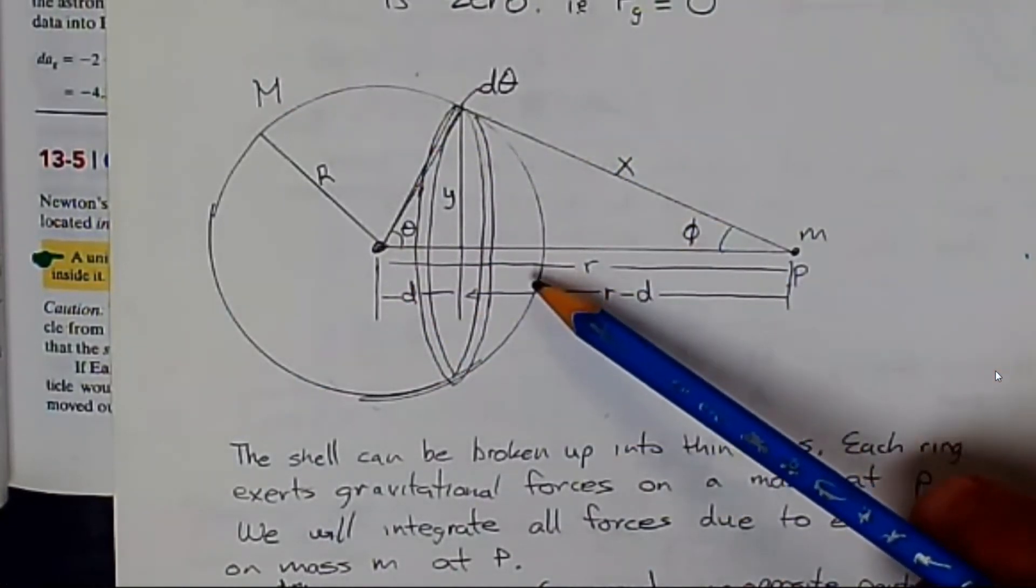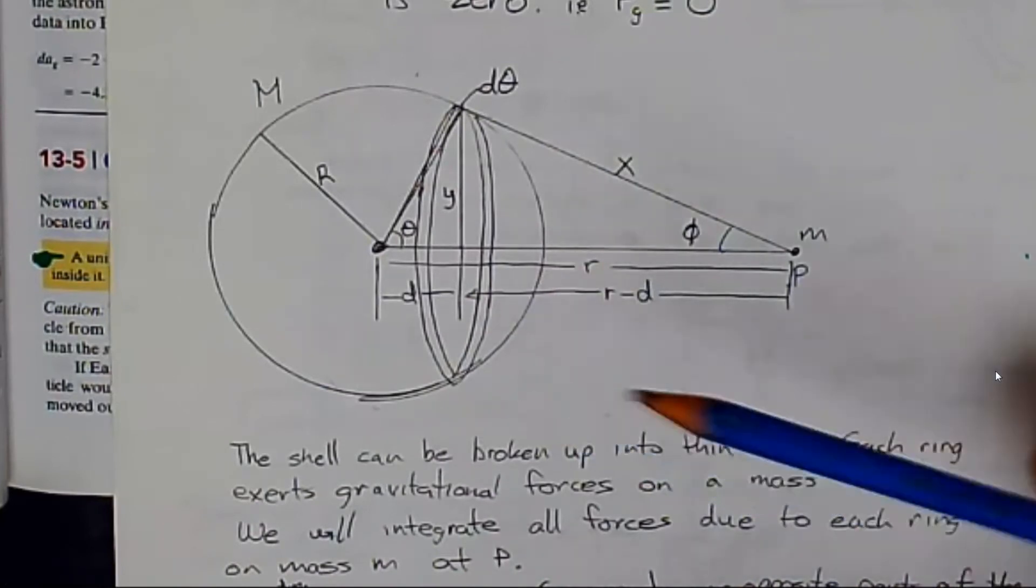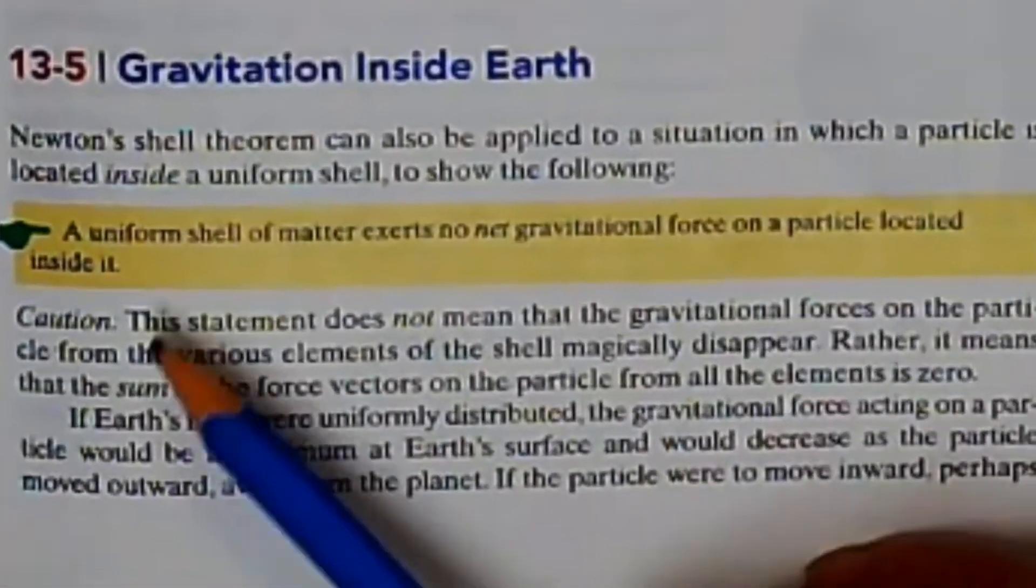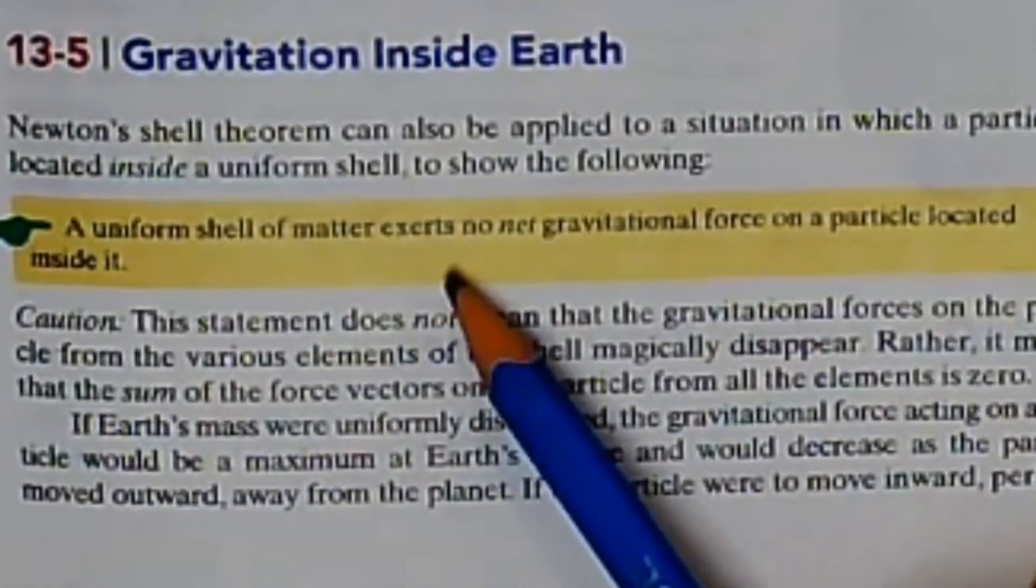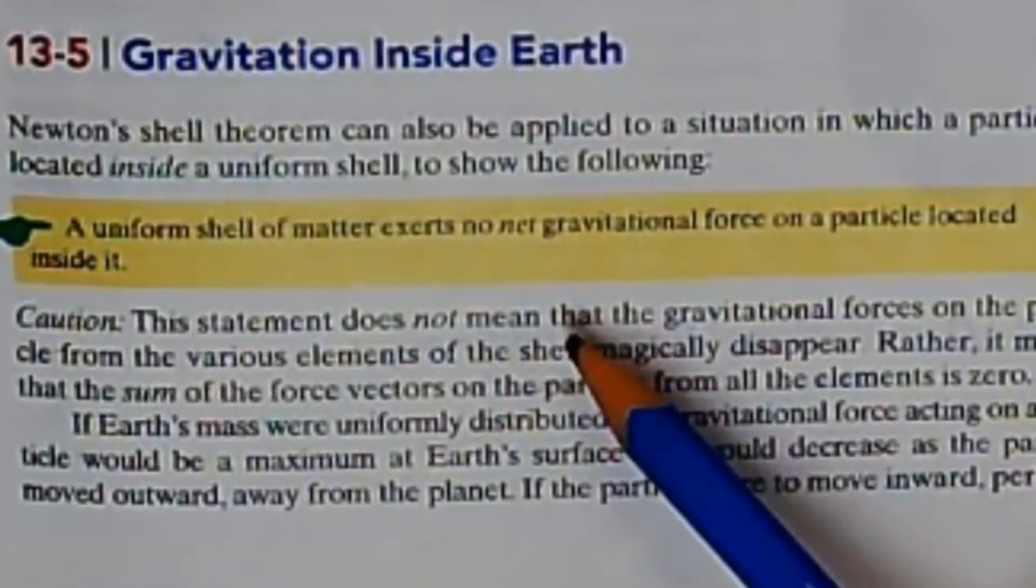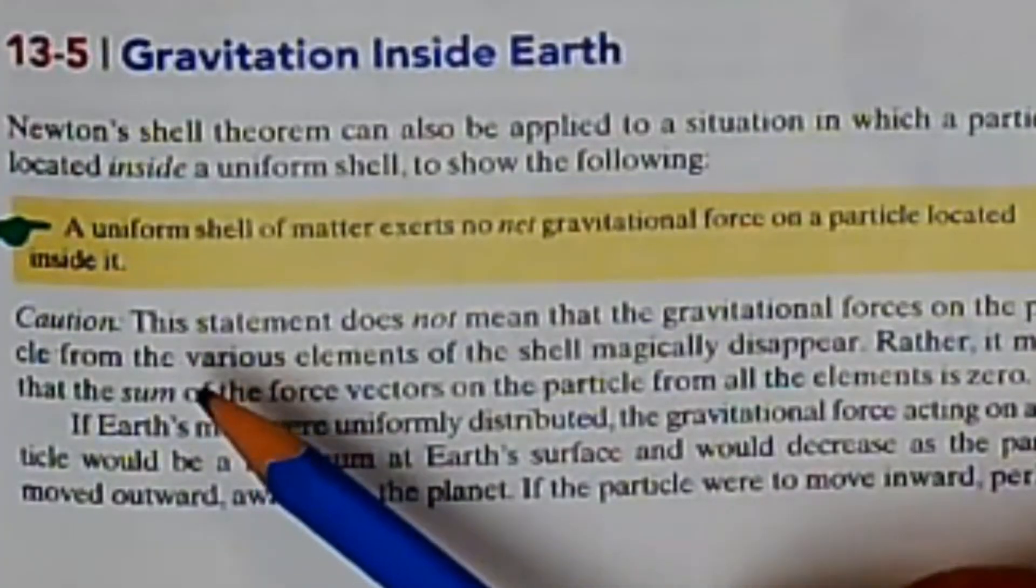So that was the first part of Newton's Shell Theorem. There is a second part, however, that says a uniform shell of matter exerts no net gravitational force on a particle located inside of it.